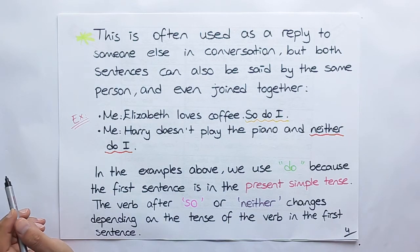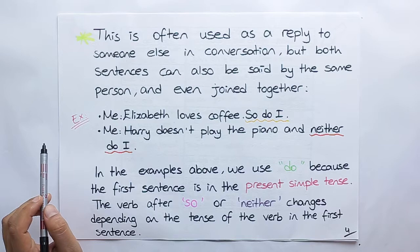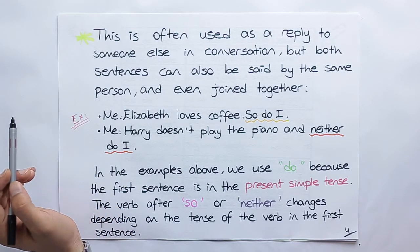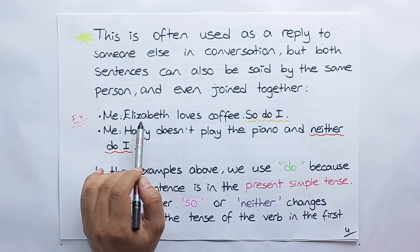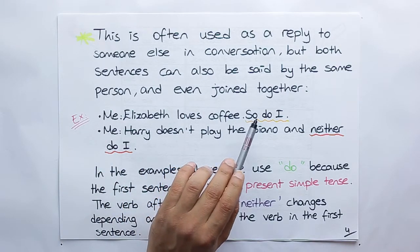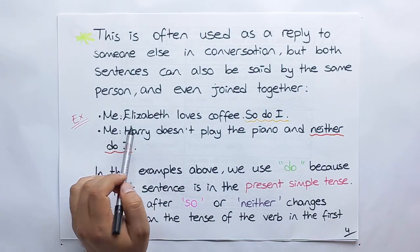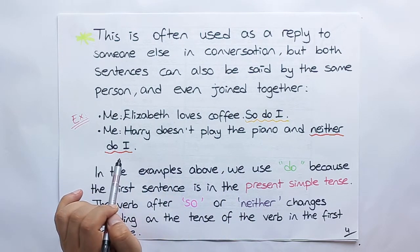Here it says that this is often used as a reply to someone else in conversation. But both sentences can also be said by the same person and even joined together. Now, let's read the examples. Me, here I am speaking. Elizabeth loves coffee, so do I. Or, Harry doesn't play the piano and neither do I. Okay?